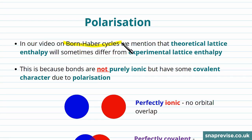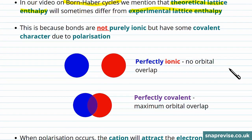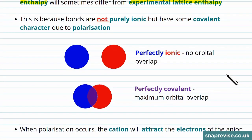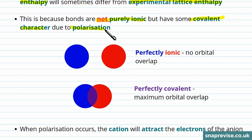If you've watched our Born-Haber Cycle videos, then you'll have been introduced to the concept that theoretical lattice enthalpy will sometimes differ from the experimental lattice enthalpy. The difference in the theoretical prediction versus the experimental value is because the bonds are not purely ionic, which is what the theory assumes. They have a somewhat covalent character due to polarisation.